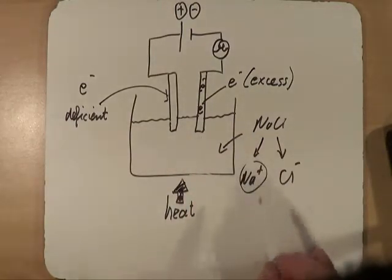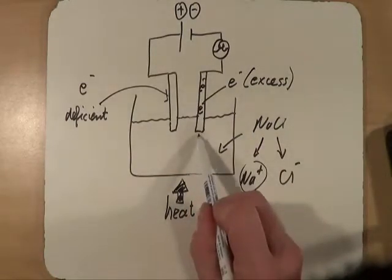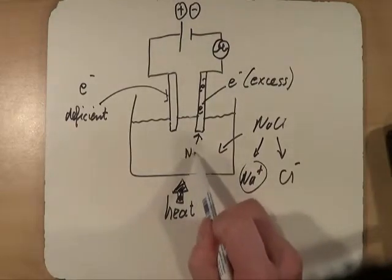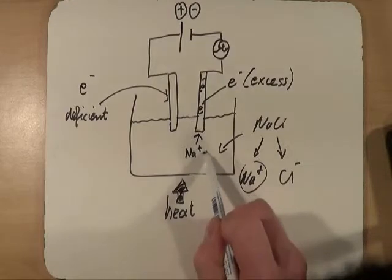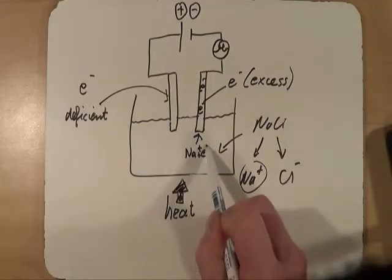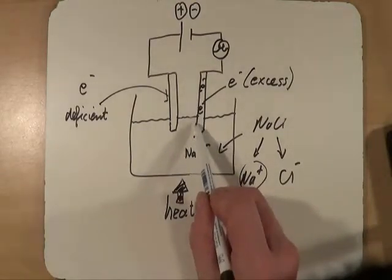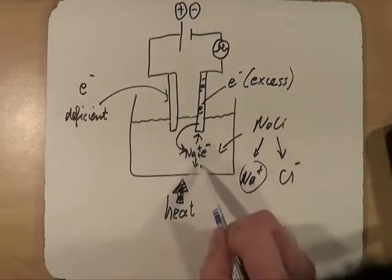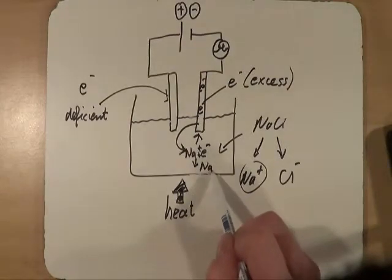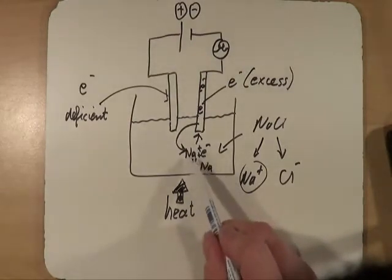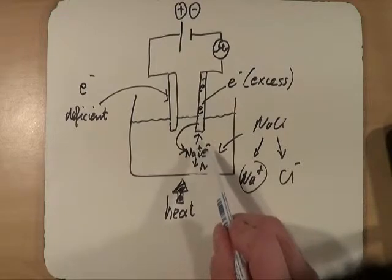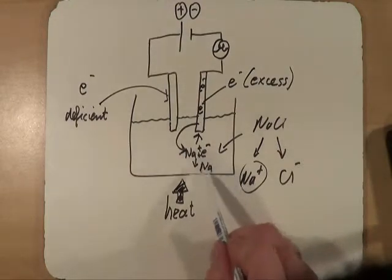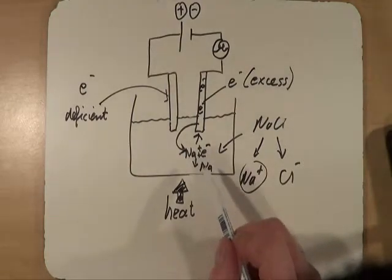Now my sodium ion is positive and would be attracted to here, to my negative terminal. And when it gets there, it has the ability to actually take an electron off the electrode. So it will gain an electron and it will just turn into uncharged sodium metal. Na+ plus an E-, so a plus and a minus together, no charge. And I get sodium metal.